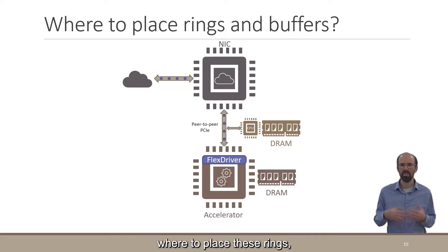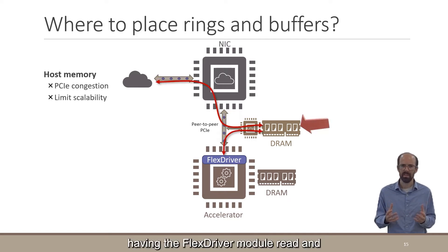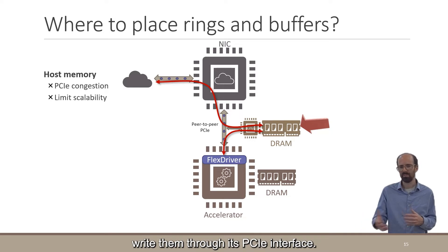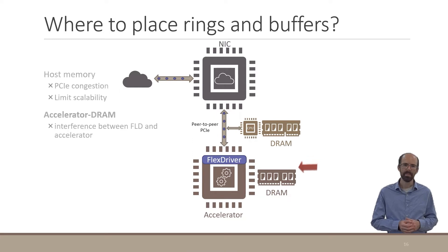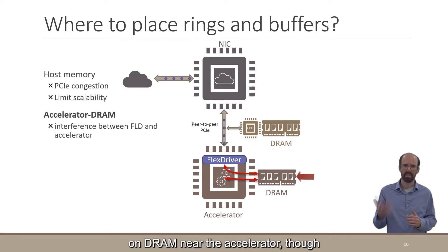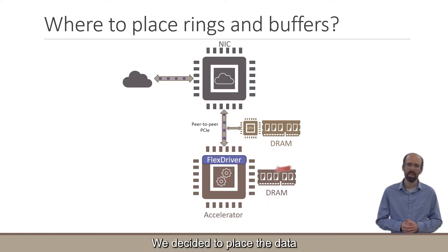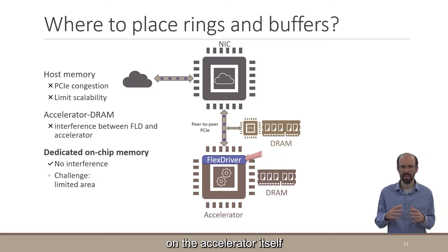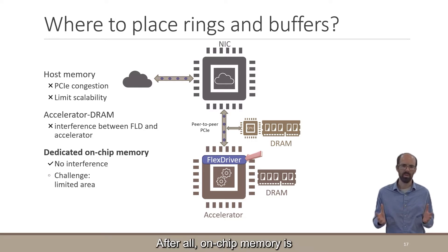For FlexDriver, we need to decide where to place these rings and similar data structures. We could put them in host memory, having the FlexDriver module read and write them through its PCIe interface. However, this can increase the load on the CPU's PCIe link and limit solution scalability. Another alternative is to place them on DRAM near the accelerator, though this can cause interference with accesses of the accelerator itself. We decided to place the data on the accelerator itself within the FlexDriver module. This eliminates interference with other components, but introduces a tight constraint on the amount of memory we can use, since on-chip memory is more expensive and our goal was to save accelerator area.